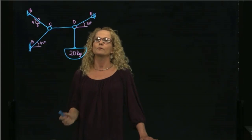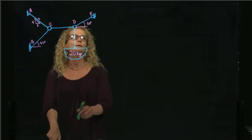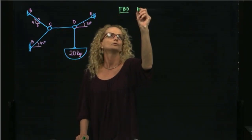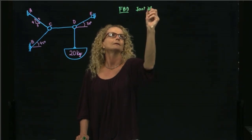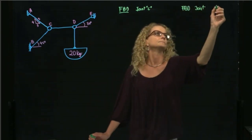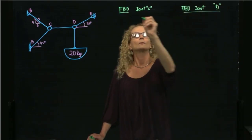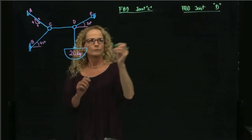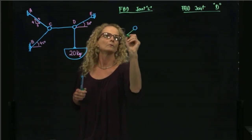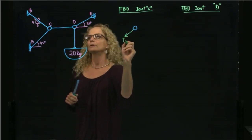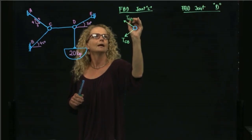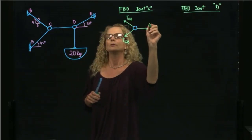The first thing we will do is draw our free body diagrams. I will do the free body diagram of joint C and the free body diagram of joint D. For joint C, we see that we have three cables: the tension T_CB, the tension T_CA, and the tension T_CD.